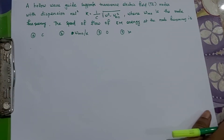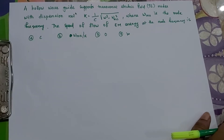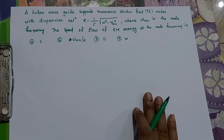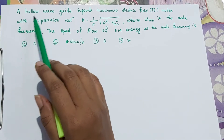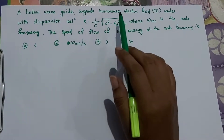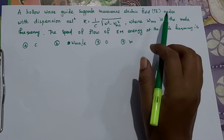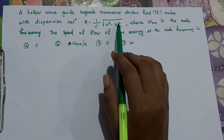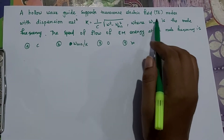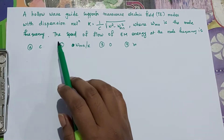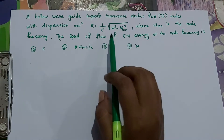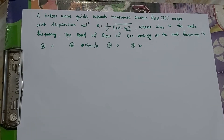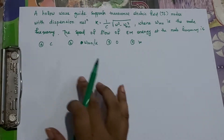Hello guys, welcome back to our channel. Today we will discuss one more question from CSIR NET physics. The question says: a hollow waveguide supports transverse electric TE modes with dispersion relation k = (1/c)√(ω² - ω²_mn), where ω_mn is the mode frequency. We need to find the speed of flow of electromagnetic energy at the mode frequency. These are the four options.